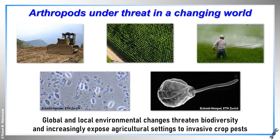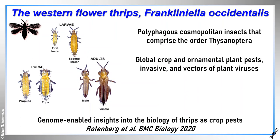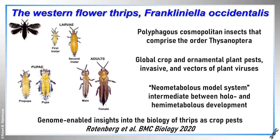To start with, I will focus on a worldwide pest species for which the paper just came out in BMC Biology last week. This is our genome sequencing and analysis of the western flower thrips, the first genomic resources for the order Thysanoptera. As many of you will no doubt know, these thrips are an invasive species with a global distribution that cause substantial damage to crops and ornamental plants, particularly in greenhouses.